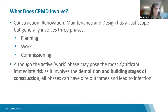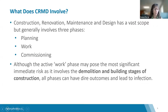CRMD has a vast scope but generally involves three phases: planning, work, and commissioning. It is not just about major undertakings like constructing a new facility or adding a wing — it involves all levels of work, including things considered mundane, like reconfiguring or painting a room, or installing a portable air conditioning unit. All projects can pose a risk, and simple work can quickly escalate. Although the active work phase may pose the most significant immediate risk, all phases can have dire outcomes and lead to infection.